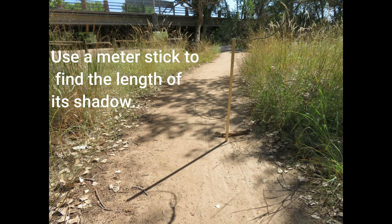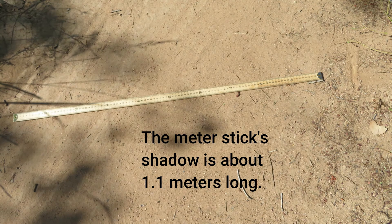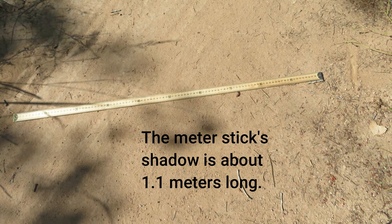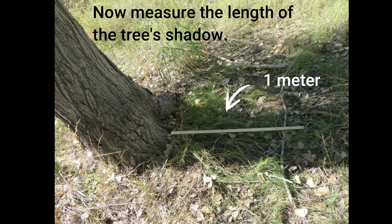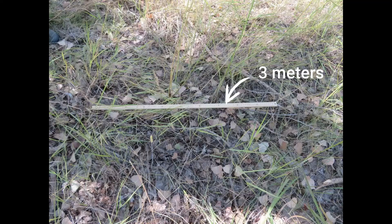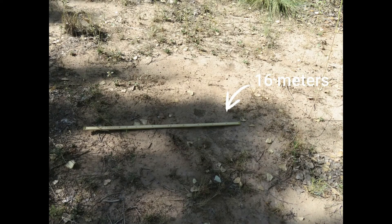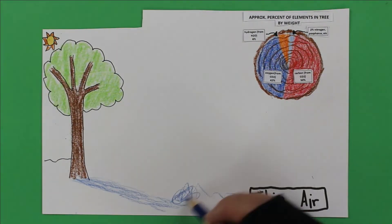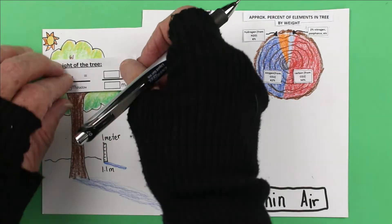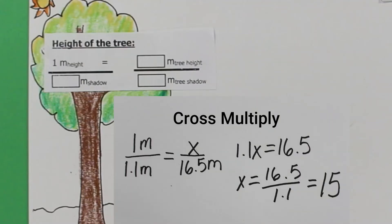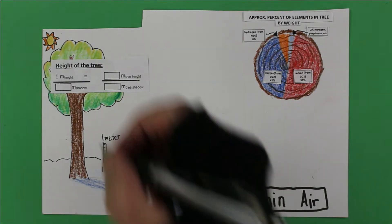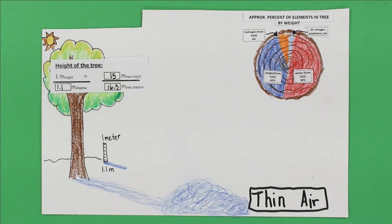At this time of day, 1 meter of height equals 1.1 meter of shadow. My tree's shadow is 1, 2, 3, 4, 5, 6, 7, 8, 9, 10, 11, 12, 13, 14, 15, 16, and more. Let's call it 16.5 meters. Solve the proportion. And my tree is 15 meters tall.